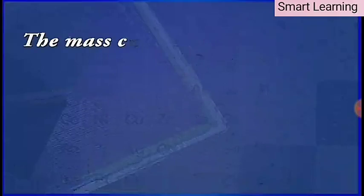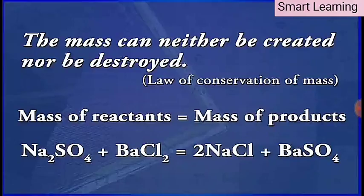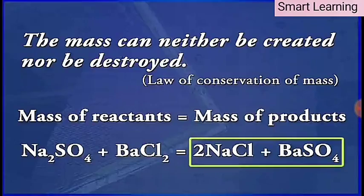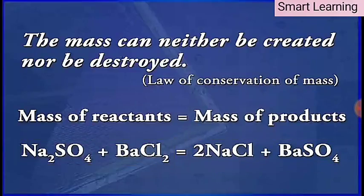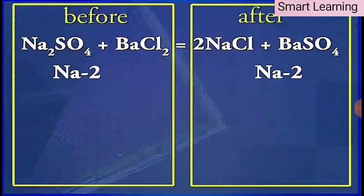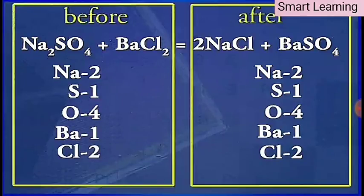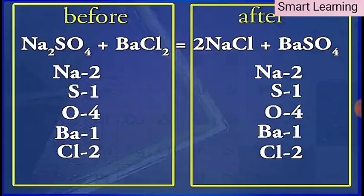The mass can neither be created nor be destroyed in a chemical reaction. This is the law of conservation of mass. Thus, the total mass of the elements present in the products must be equal to the total mass of the elements present in the reactants. This means that the number of atoms of each element remains the same both before and after the completion of a chemical reaction.